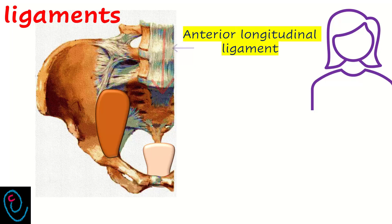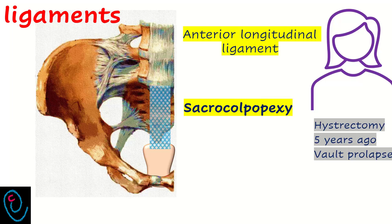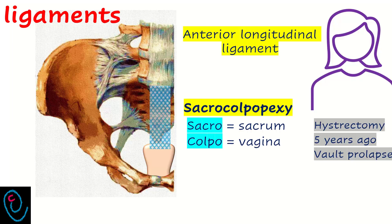This woman had a hysterectomy five years ago and now presents with prolapse of the vault. One of the operations described for management of vault prolapse is called sacrocolpopexy. Sacro means sacrum, colpo means vagina, and pexy means fixation — meaning the fixation of the vault to the sacral promontory. Sutures are taken in the anterior longitudinal ligament in front of the sacral promontory.